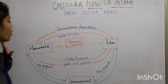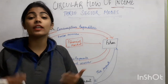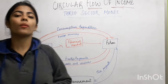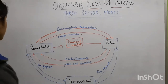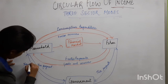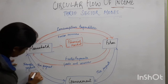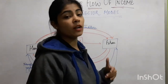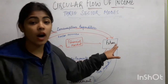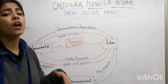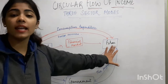Some households work in government and receive salary — those are transfer payments from the government to households. The government also makes purchases from firms, which are production units, and firms receive payments. The government also provides subsidies to firms.